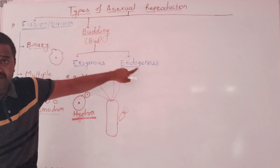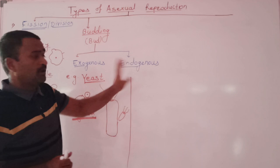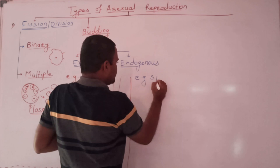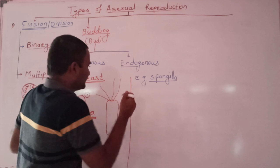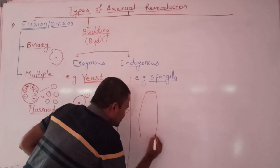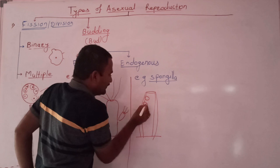Budding has two types, exogenous and endogenous. Now let's see endogenous budding. Endogenous bud develops in a sponge called spongilla. Example is spongilla. One more example is ephydatia. Here the bud develops inside the body. Suppose this is the body of a sponge. This is the body wall, then a cavity called spongocoel. Buds develop inside the body.